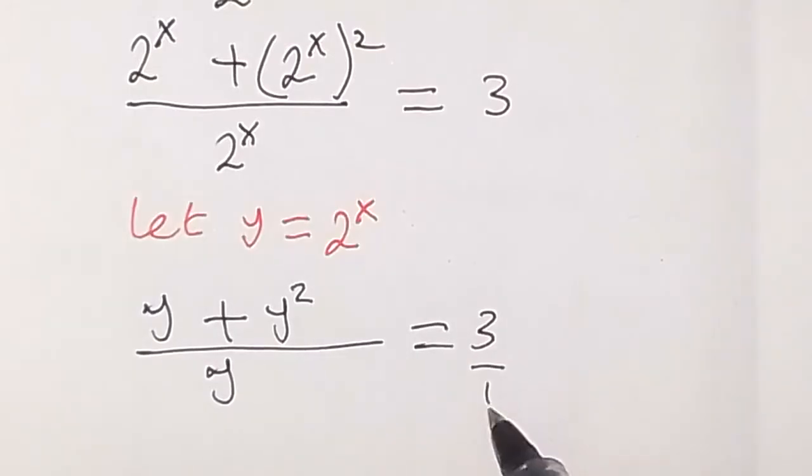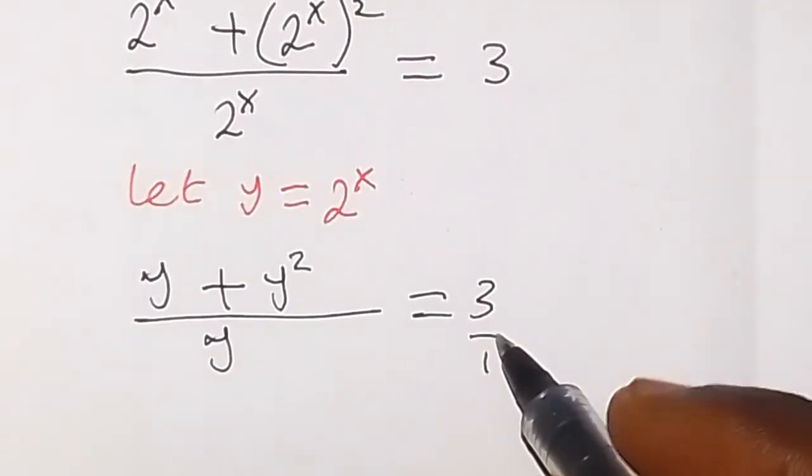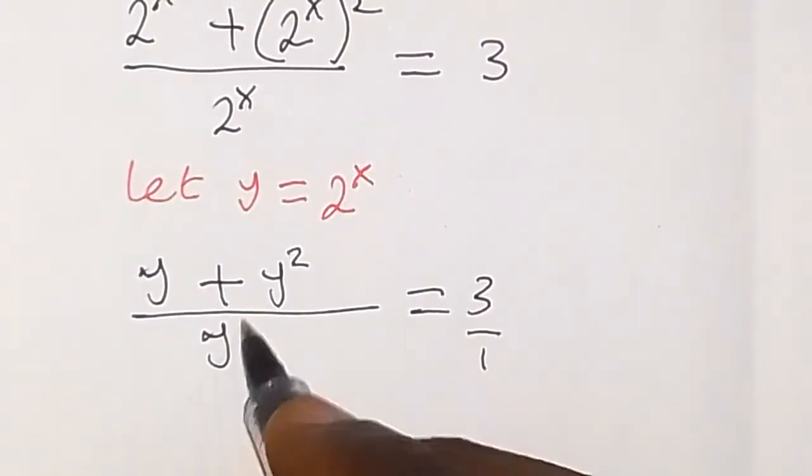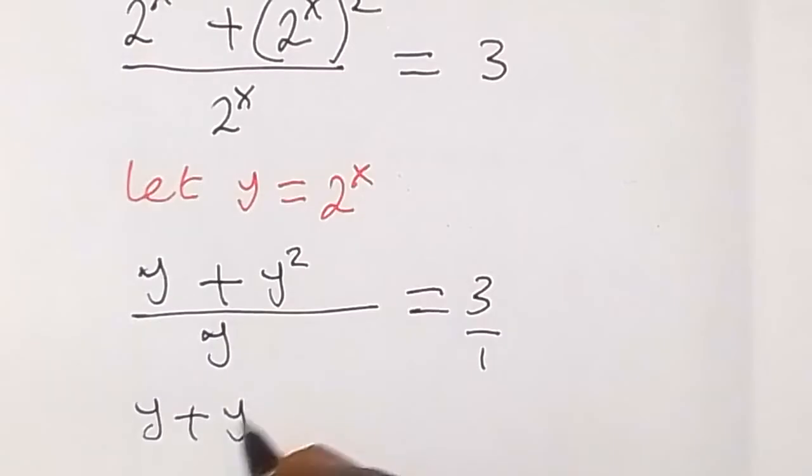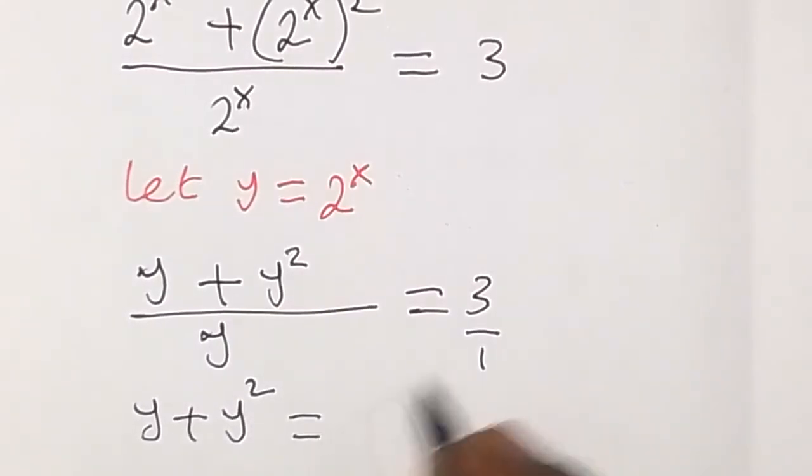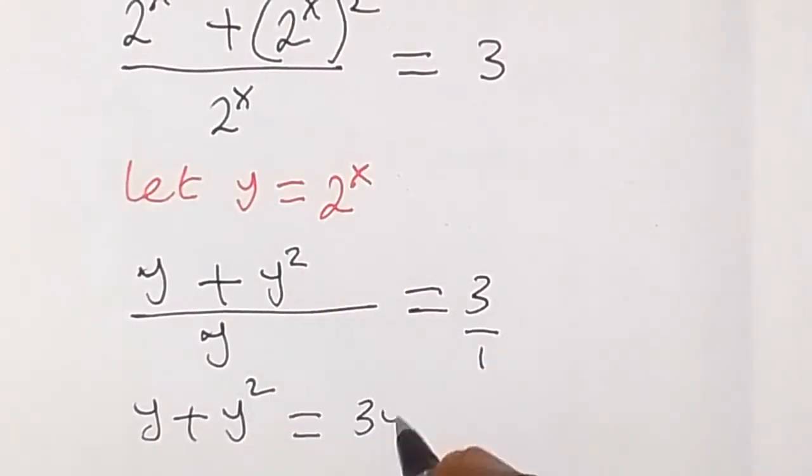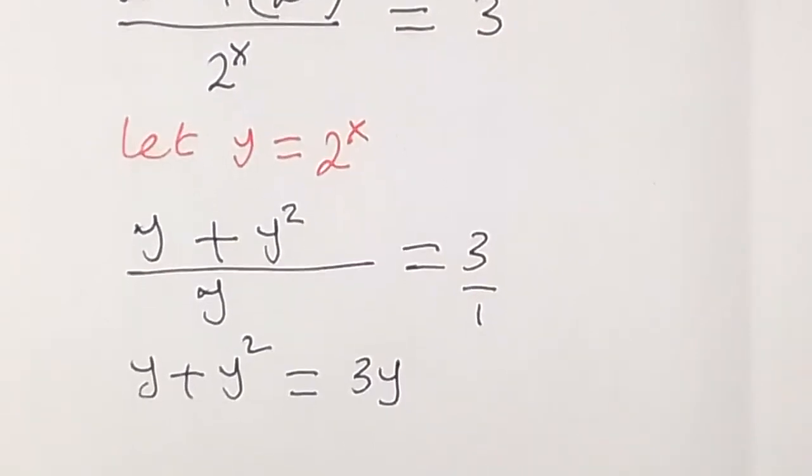We can see that this 3 over 1, we can cross multiply here. Then we have y plus y square multiply by 1, that's y plus y square equals to 3 times y, that's 3y.